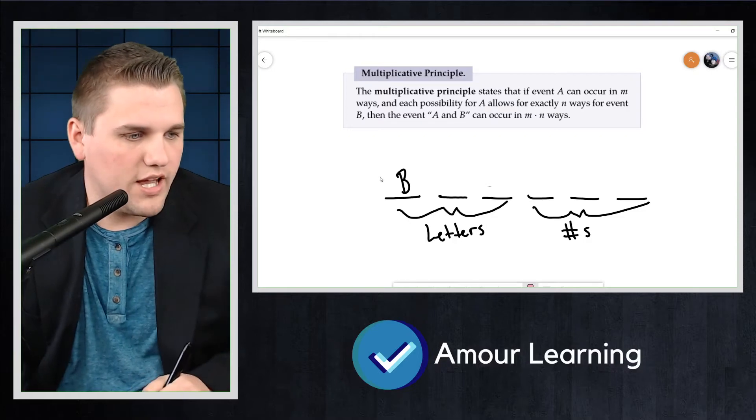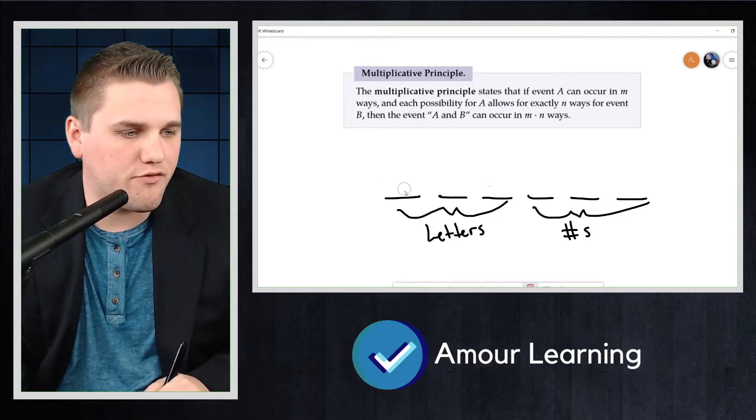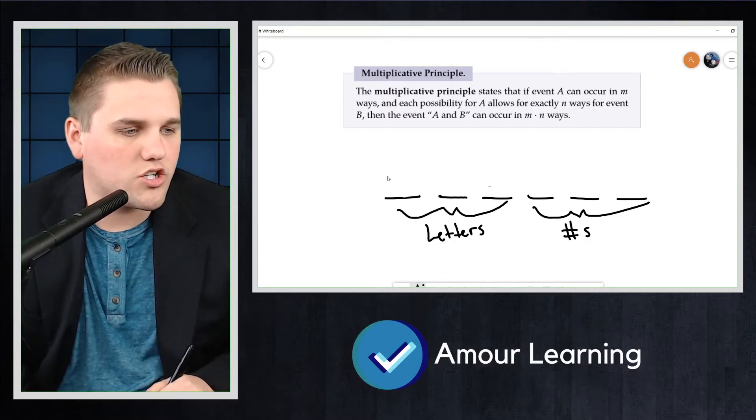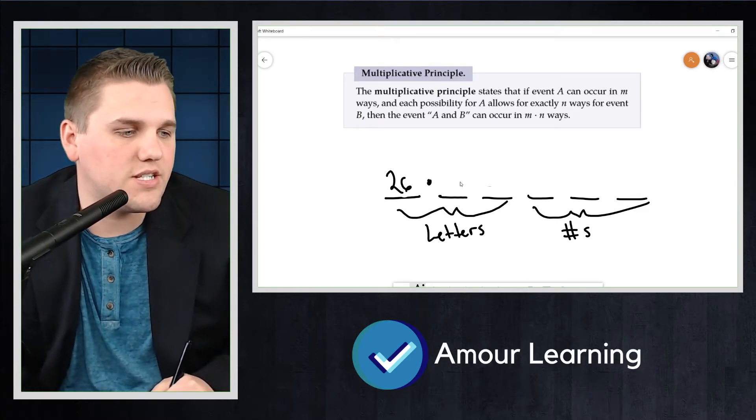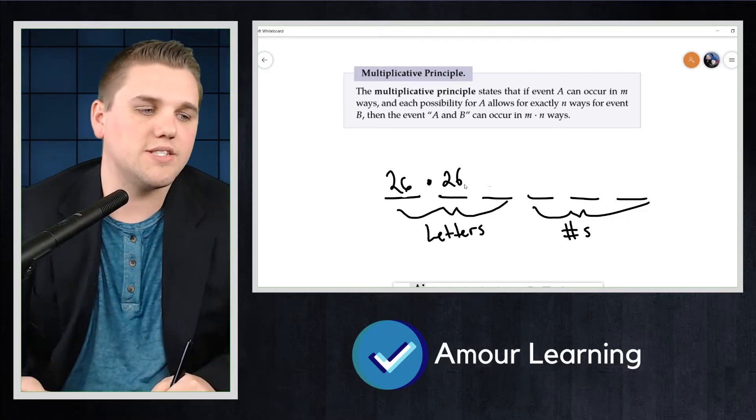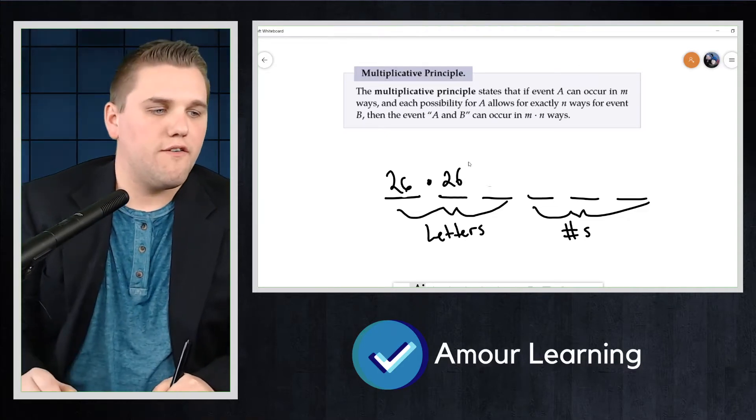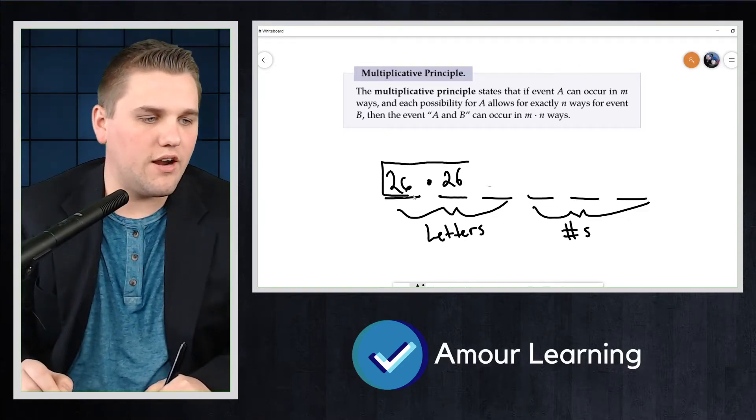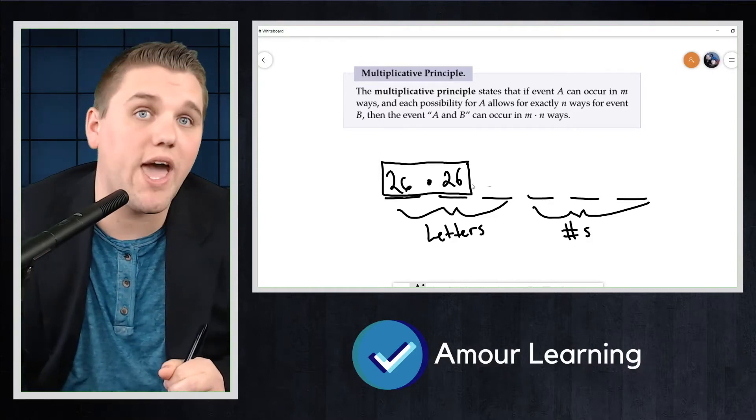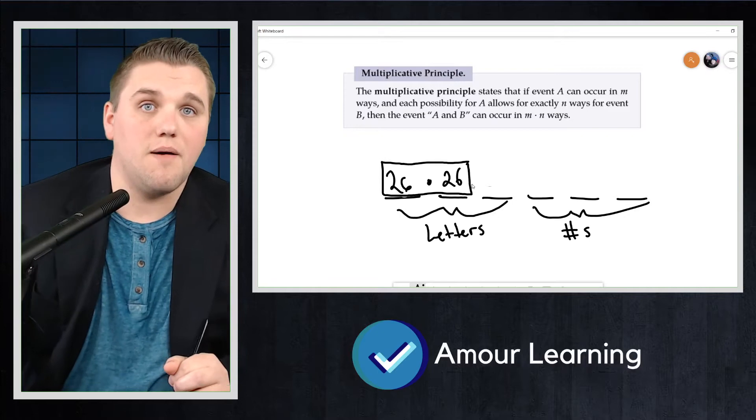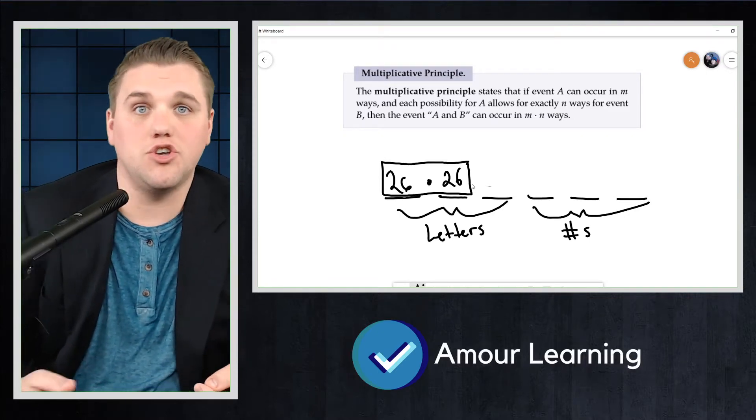How many ways can we pick this first letter here? Well, there are 26 ways that we can pick for the first letter, and for the next event there are 26 ways. And so for these first two letters right here, there are 26 times 26 ways we can make a combination of two letters. And that's true.